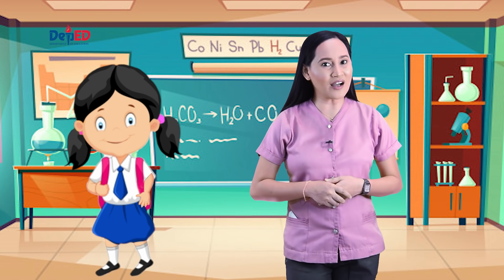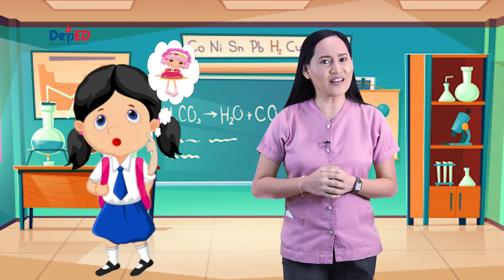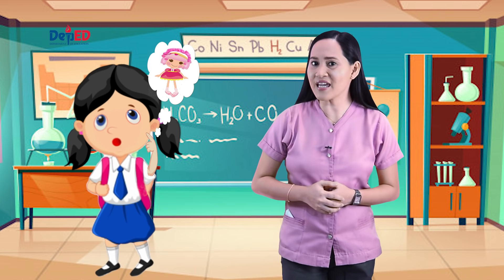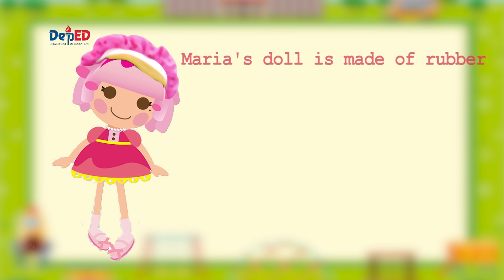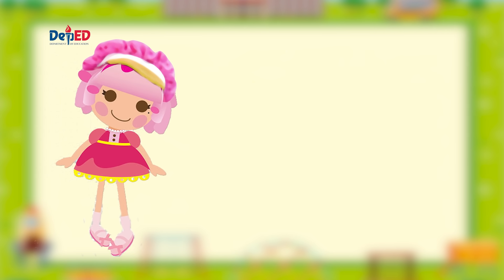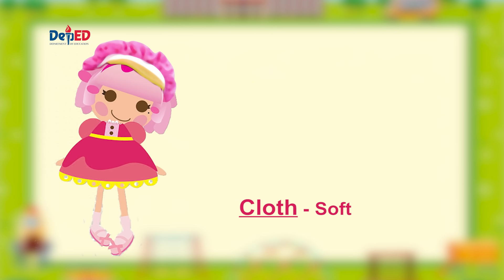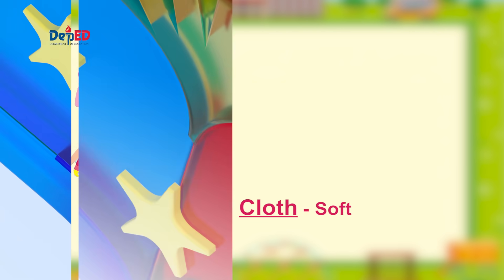Let's see what Maria wants. She wants a doll! Maria's doll is made of rubber. It is safe to play with because it is soft, flexible, and durable. It does not break easily as well. The head and shoes of Maria's doll are made of plastic — flexible and waterproof. The dress of Maria's doll is made of cloth, which is soft, so when it tears she can just sew it, and when it's dirty or has a stain she can just wash it.